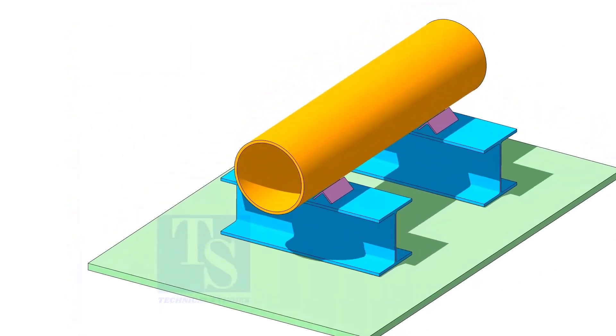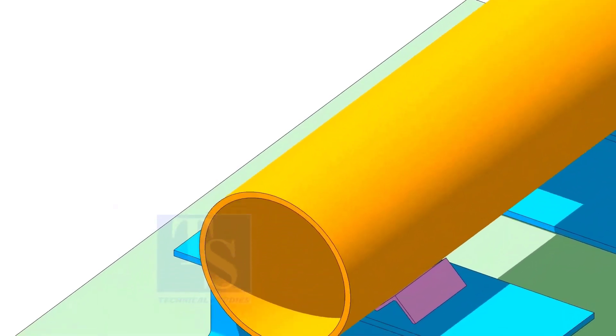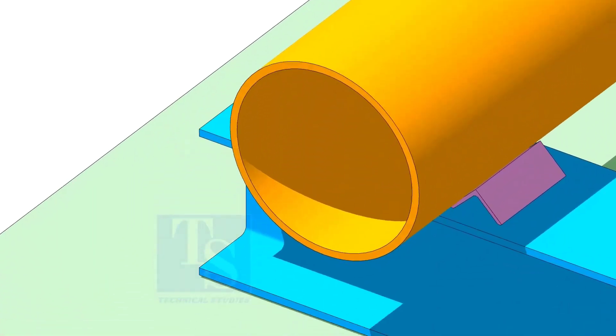Make sure both ends of the pipes are square. Put the flange in its position.